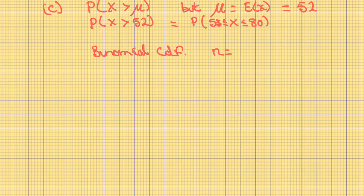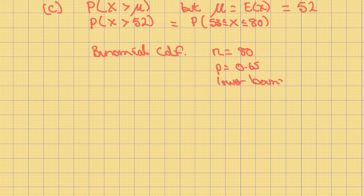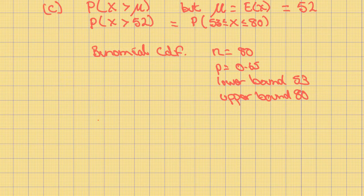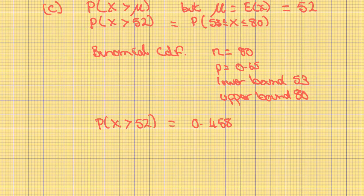We will use binomial CDF with N equal to 80, P equal to 0.65, lower bound 53, upper bound 80. When you work it out, the probability that X is greater than 52 is equal to 0.458, which as a percentage is 45.8%.